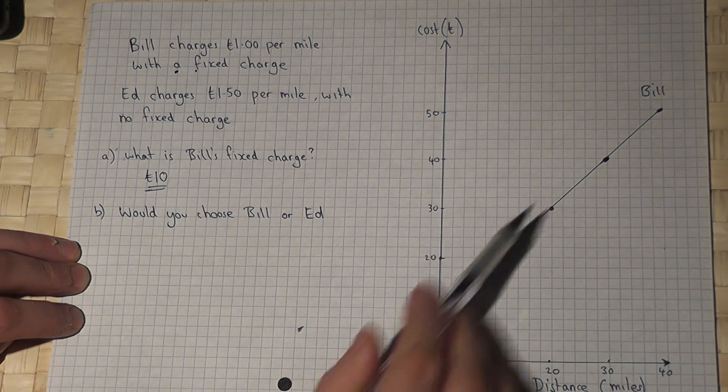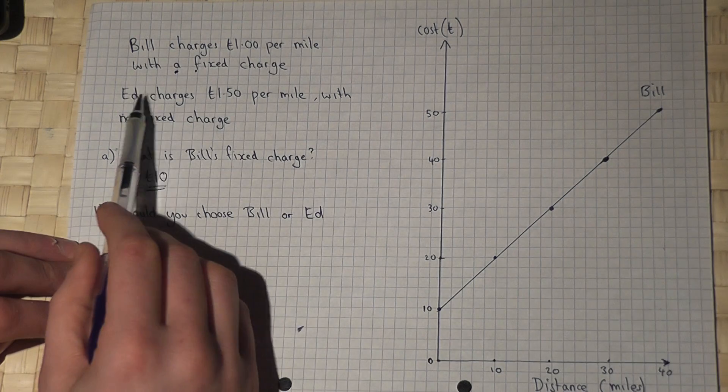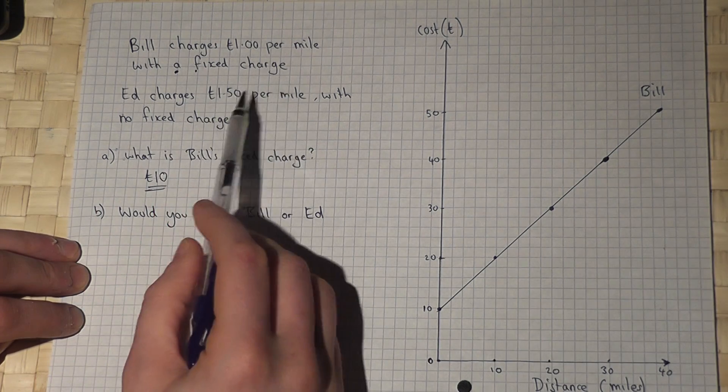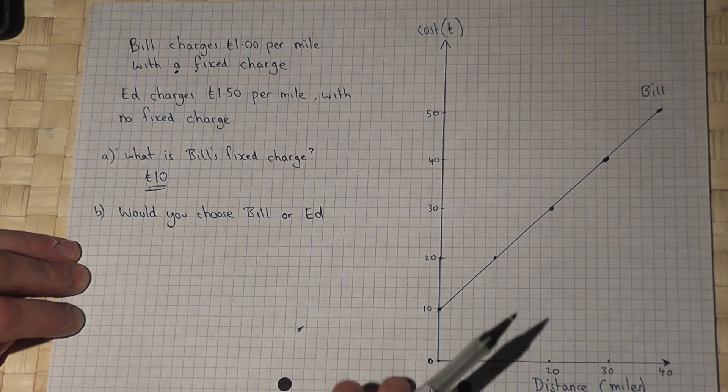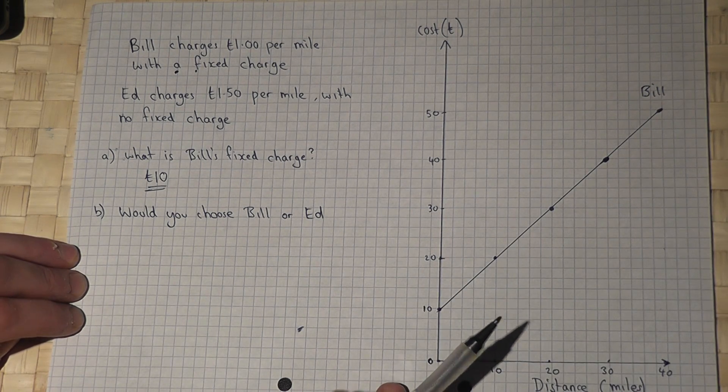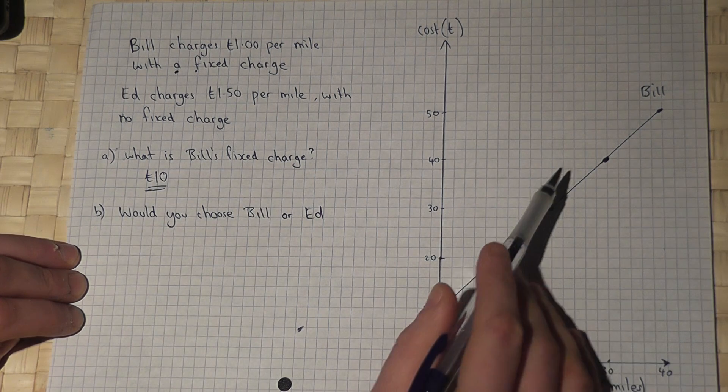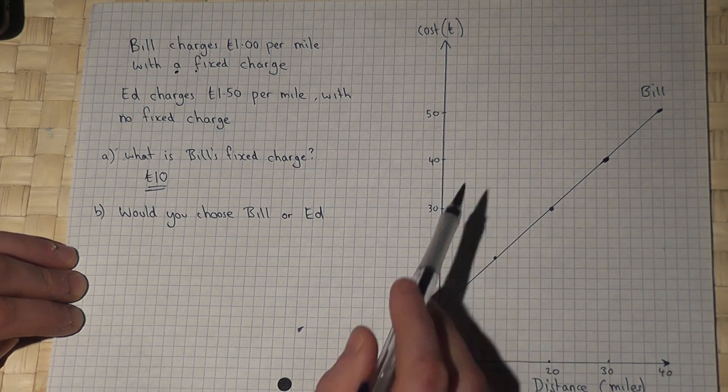Bill is one option, that's Bill's graph. Ed charges £1.50 per mile, and the question is, would you choose Bill or would you choose Ed? If we plot Ed's graph on the same pair of axes, we can compare the two of them.